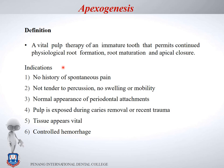Indications for apexogenesis require a healthy radicular pulp: no spontaneous pain, no irreversible pulpitis, tooth not tender, no swelling or mobility, healthy periodontal ligaments, normal bone, intact lamina dura, pulp exposed during caries removal or recent trauma, tissue appears vital, and hemorrhage can be controlled.